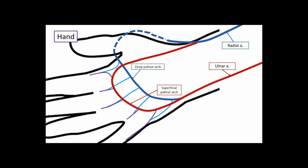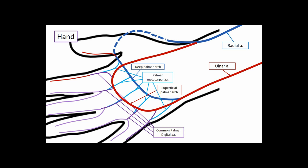Both palmar arches contribute to the blood supply of the digits. Contributions from the superficial and deep palmar arches (palmar metacarpal arteries from the deep arch) combine to form the common palmar digital arteries — blue plus yellow equals purple in the color coding. These then send off proper palmar digital arteries that travel on either side of each digit. To remember the difference: proper palmar digital arteries run on either side of individual digits (like extending your pinky properly when drinking tea), while common palmar digital arteries are the contributions from the arches.